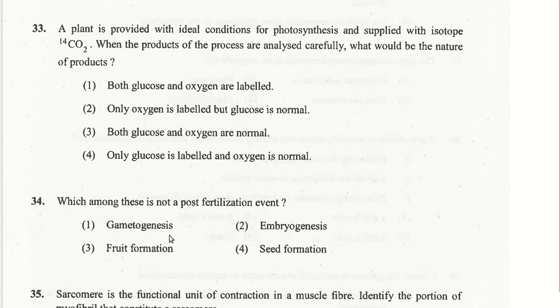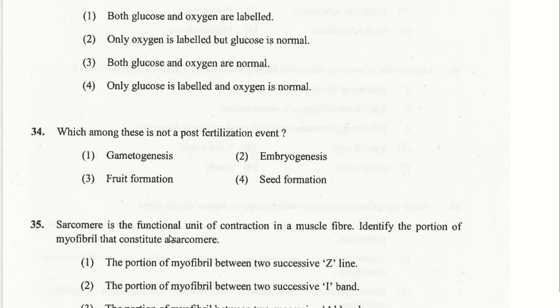Gametogenesis is not a post-fertilization event — it is a pre-fertilization event. The first option is the answer for question 35. A sarcomere is the portion of a myofibril between two successive Z lines.